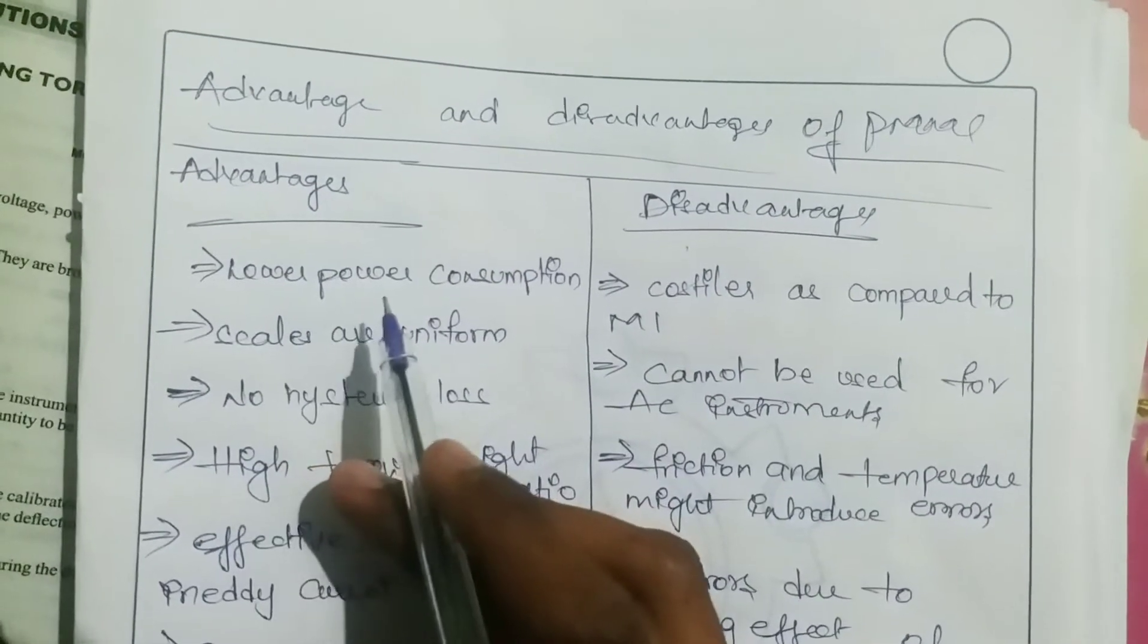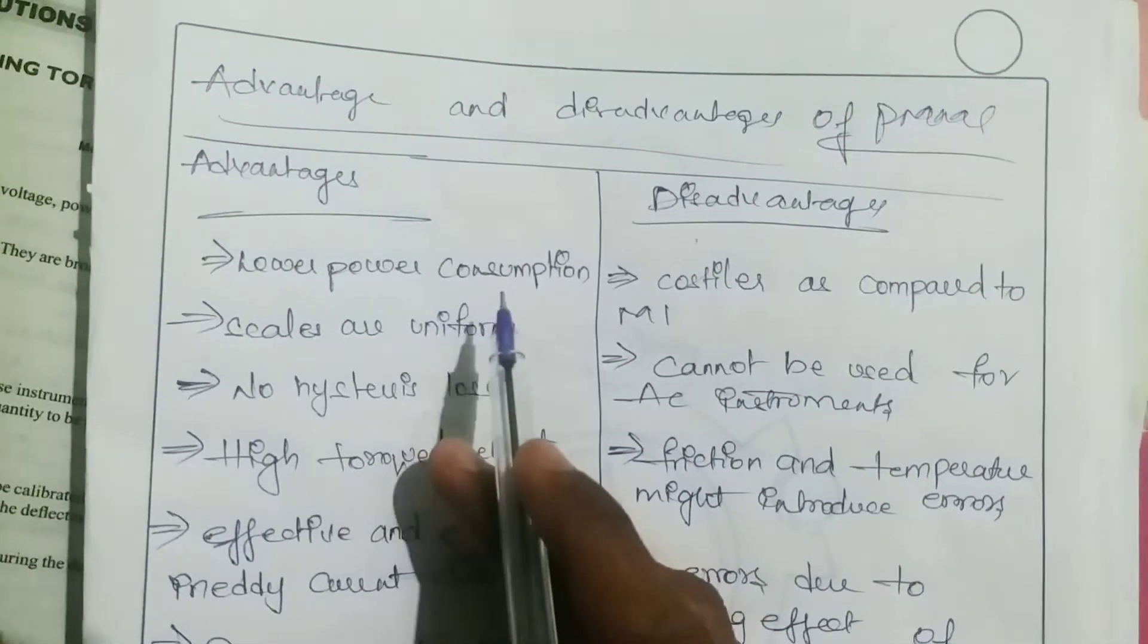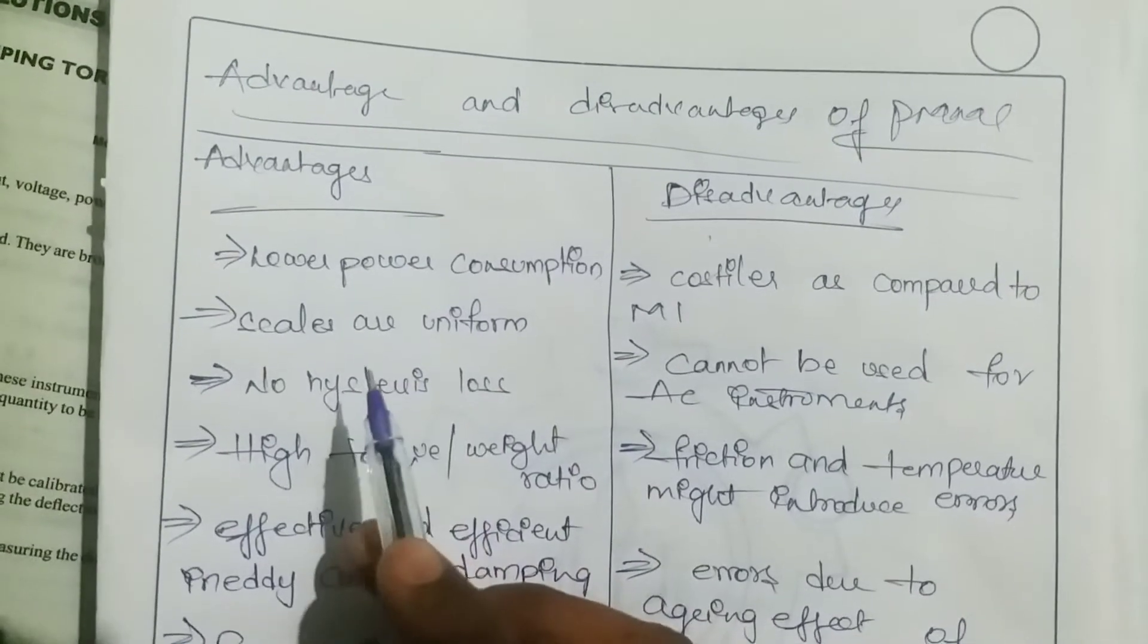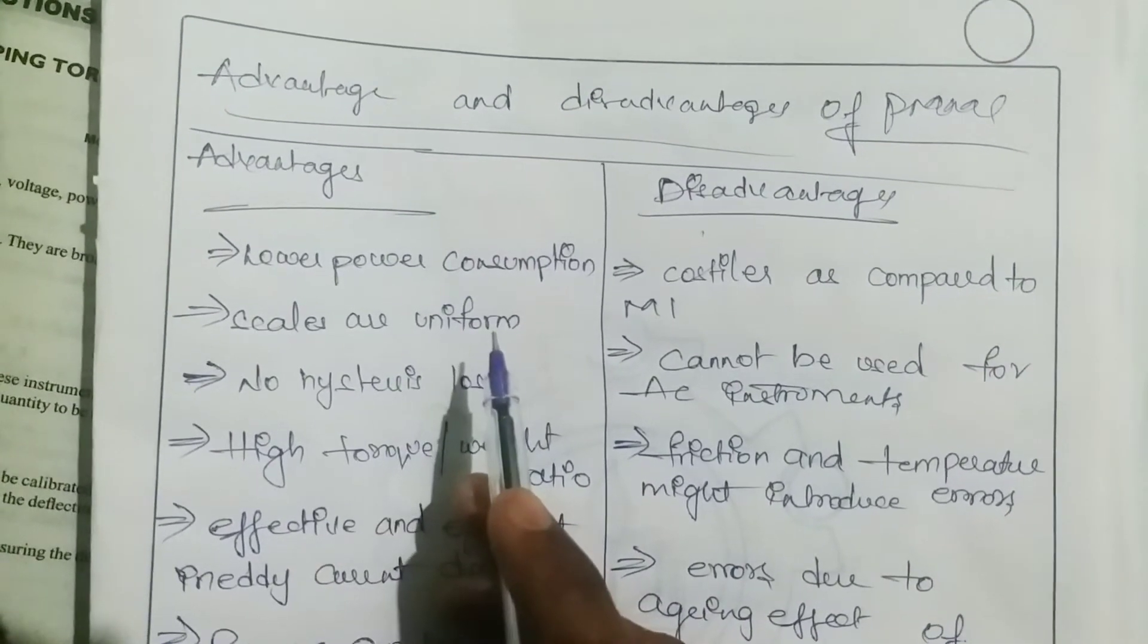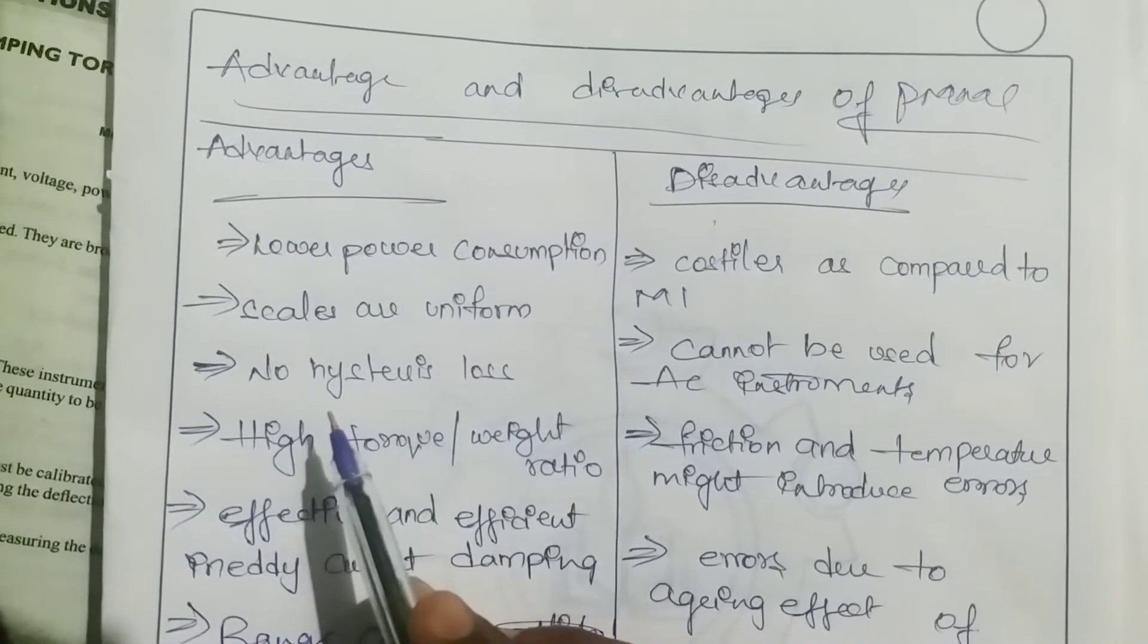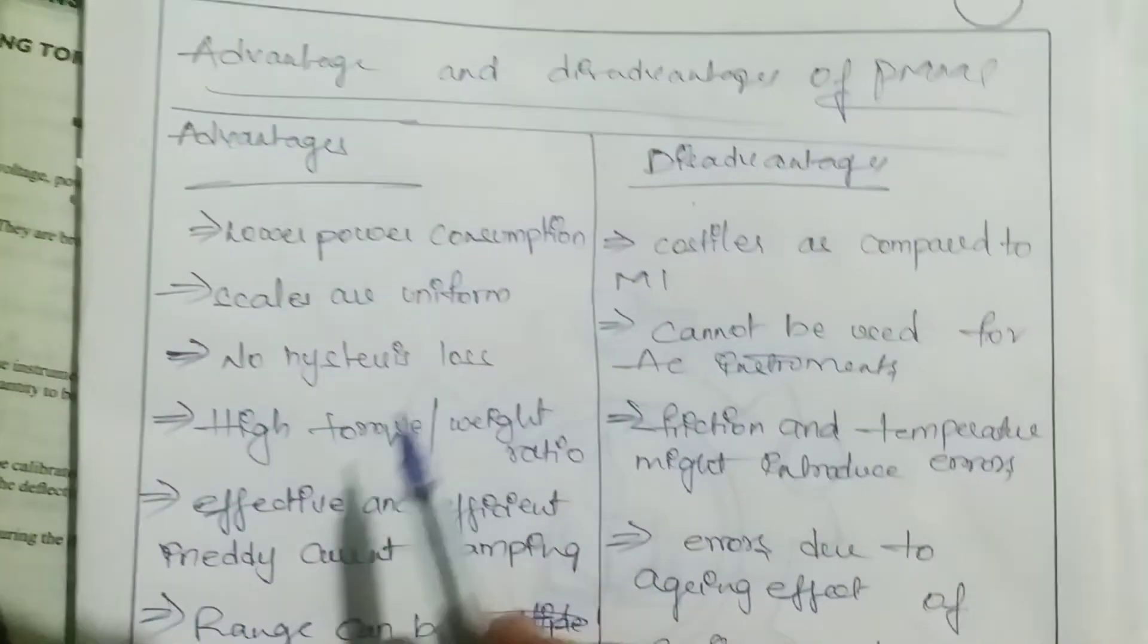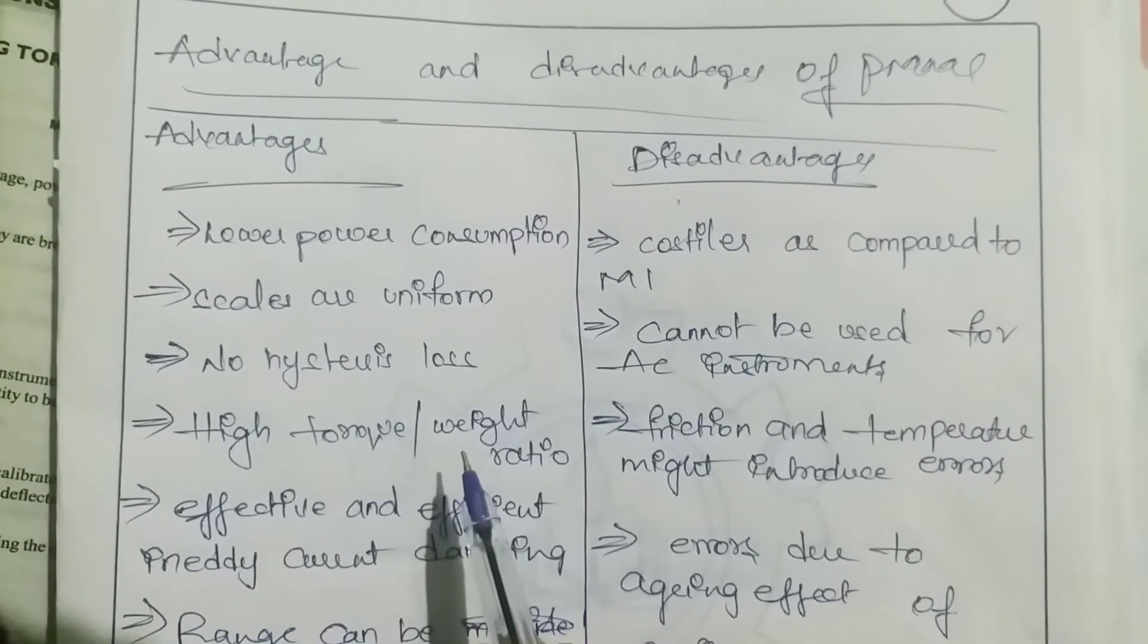First, the main advantages of PMMC instruments are lower power consumption, the scale provided is uniform, it has no hysteresis losses, and it produces high torque to weight ratio.